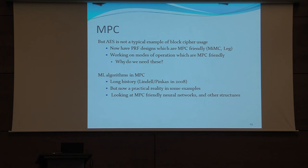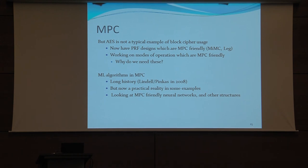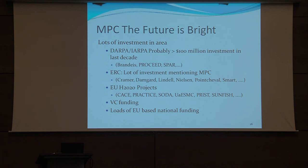I got a phone call from someone advising the US Congress, saying we want to combine two databases — how do we do this to get statistical information out? People are now seeing this. In industry, everybody's heard of homomorphic encryption and then says 'but that's too slow, you should use MPC,' and suddenly you get lots more interest. The future is bright for MPC. Probably the US government has put in well over $100 million worth of investment in this area in the last 10 years — just on the programs I know about.